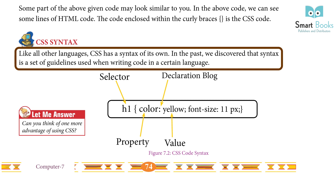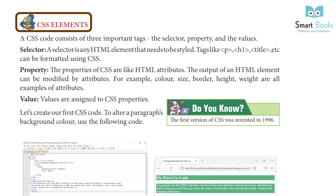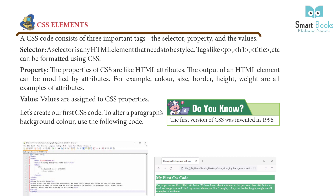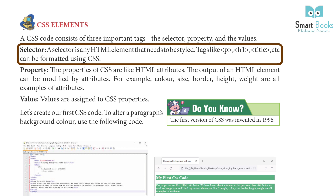Like all other languages, CSS has a syntax, which is a set of guidelines used when writing code in a certain language. Let me answer: can you think of one more advantage of using CSS? A CSS code consists of three important elements: the selector, the property, and the value. A selector is any HTML element that needs to be styled — tags like p, h1, title, etc.